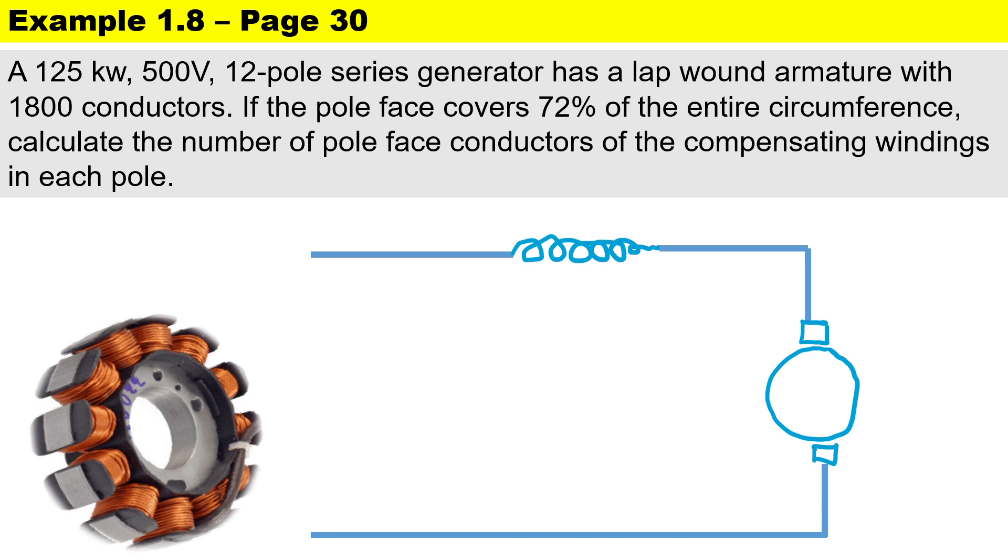This is a series generator. If it's a generator, it is delivering electrical load and therefore supplying armature current. We have some current passing through the series winding. Very important for a series circuit: I_L equals I_a which equals I_se. We have a 12-pole generator.